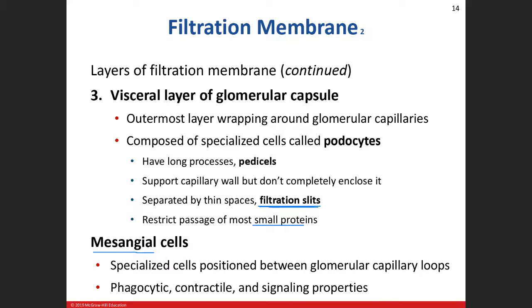Mesangial cells play a couple of different roles in our filtration membrane. They're phagocytic, which helps break down substances that shouldn't be there or deal with infection. Their contractile nature is going to influence the size of the filtration slits. ANP - atrial natriuretic peptide - is that hormone the atria produce when blood pressure increases due to more stretch on the atrial walls. It's going to affect the mesangial cells, especially their contractile characteristic.